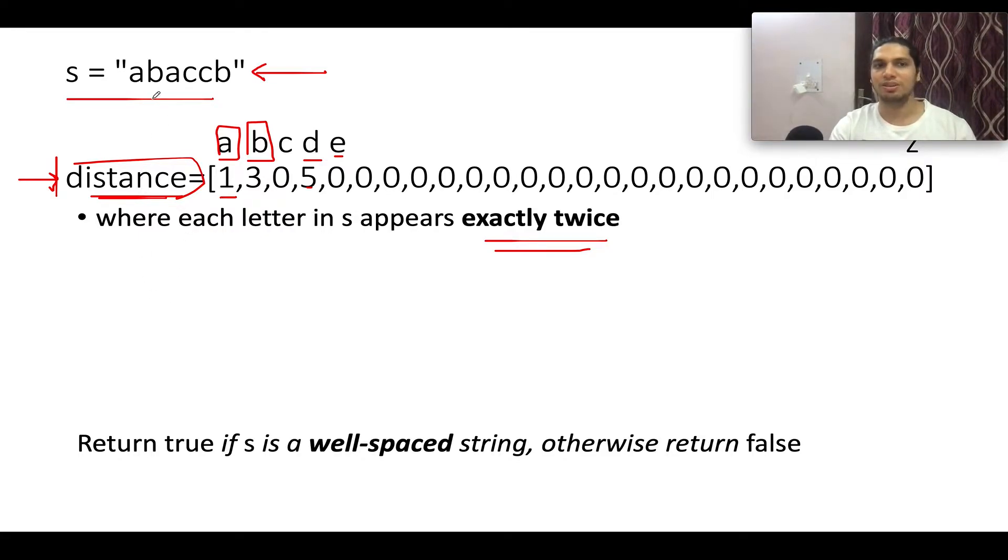What we are going to do, we'll store the indices at which A occurs in the input string. Let me just write the indexes as 0, 1, 2, 3, 4, and 5. So for A what we are going to store, we will store the indices at which A occurs. So A occurs at 0.